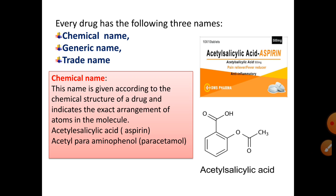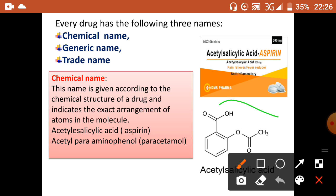The chemical name is given according to the chemical structure of a drug and indicates the exact arrangement of atoms in a molecule. For example, aspirin's chemical name is acetylsalicylic acid, which describes the exact atomic arrangement of that molecule.